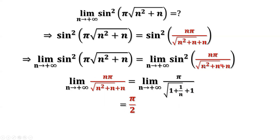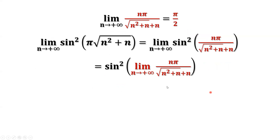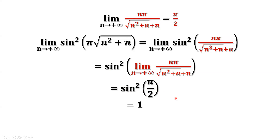Therefore the limit of the inside part is pi over 2. We can move the limit to the inside, so this limit equals pi over 2. Sine of pi over 2 equals 1, and 1 squared equals 1. Therefore, this limit equals 1. Thanks for watching, and I'll see you next time.